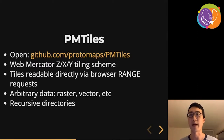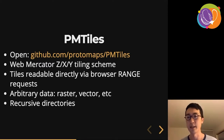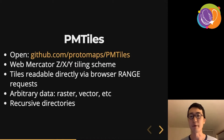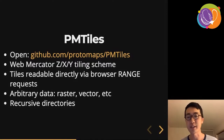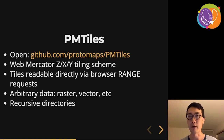What I want to talk about today is a new format that takes the benefits from Cloud Optimized GeoTIFFs and MBTiles and combines them. It's an open source format with an open source reference implementation at github.com/protomaps/pmtiles. It's specific to the web Mercator tiling scheme, tiles are readable directly via browser range requests, and those tiles can be raster images like JPEGs or PNGs, vector tiles, or anything. There are also tricks to make it efficient, such as recursive directories.